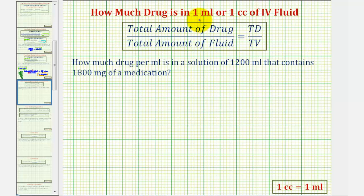To determine how much drug is in one milliliter or one cc of IV fluid, we take the total amount of drug and divide by the total amount of fluid. This is often abbreviated by TD divided by TV, where TD stands for total drug and TV stands for total volume.